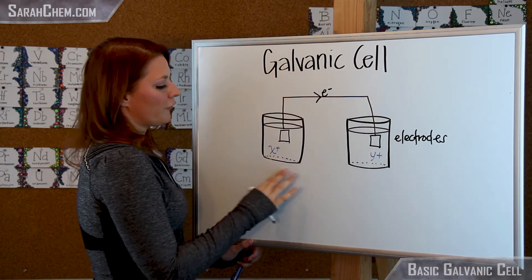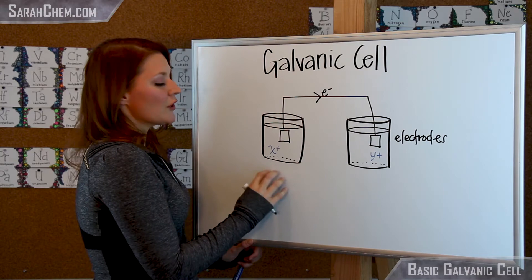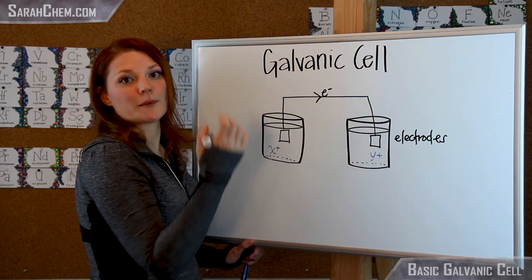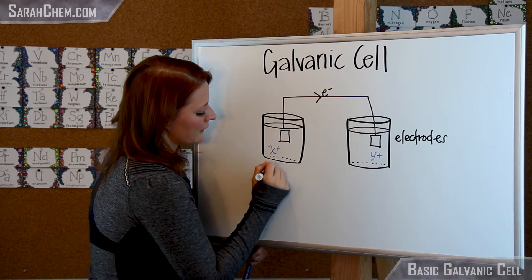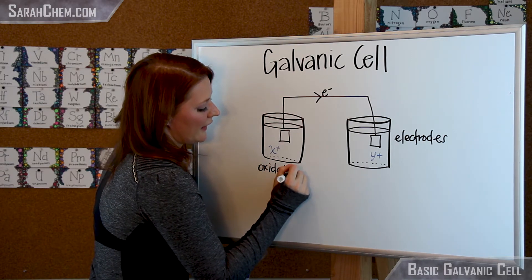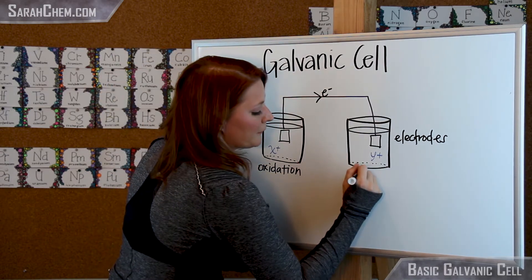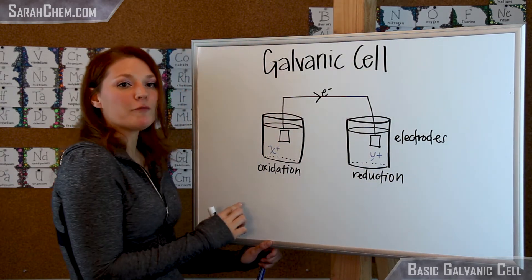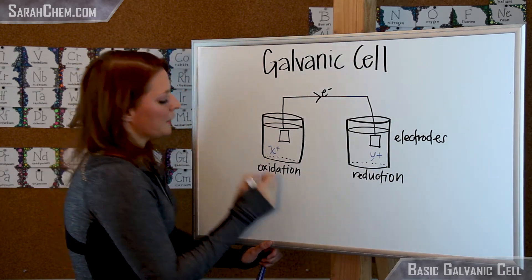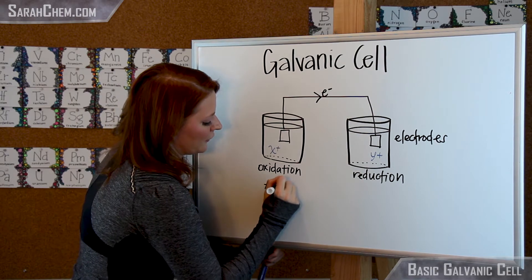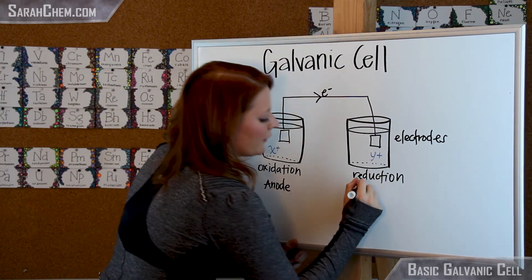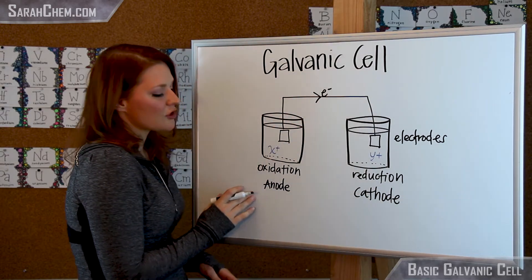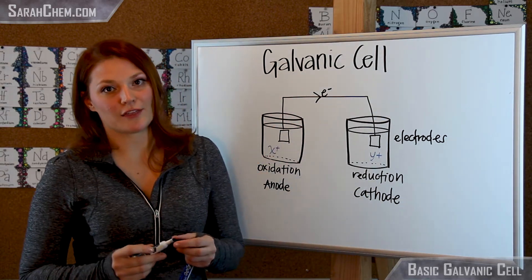The electrons are going to travel from this side — the side willing to give electrons up — and then they're taken in on the other side. That means this compartment has the oxidation reaction and this compartment has the reduction reaction. The oxidizing compartment is called the anode, and the other is called the cathode. So: oxidation at the anode, reduction at the cathode.